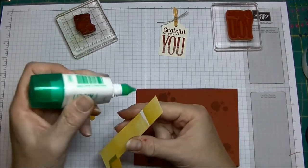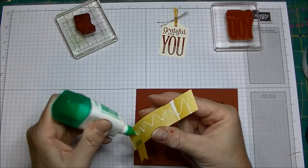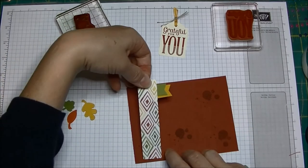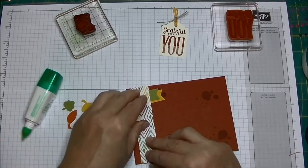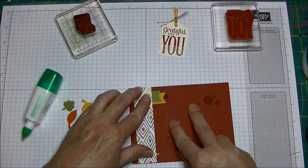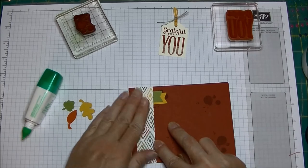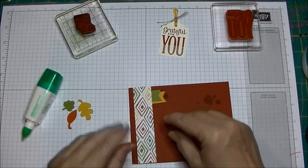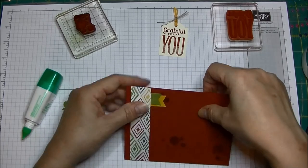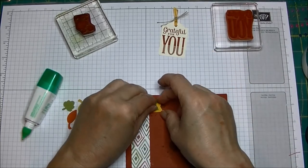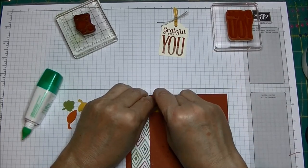You could also run this through your embossing folder so it's not plain. I'm just going to vary those a little bit just like that. Attach this to the edge just like this and straighten out those little banners, or straighten out my whole paper here. Get the paper straight first and then I'll get the banners straight, just like that.